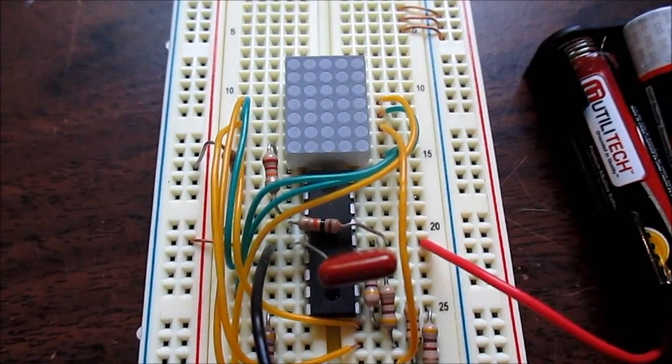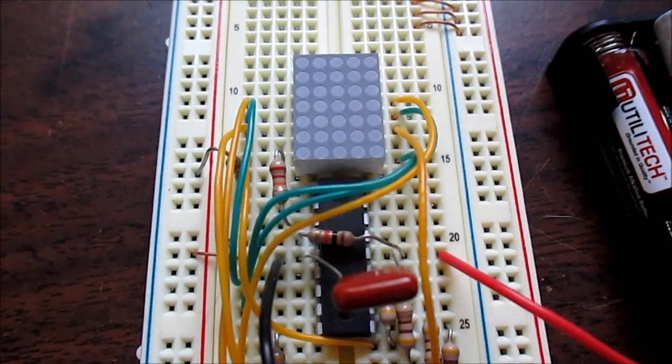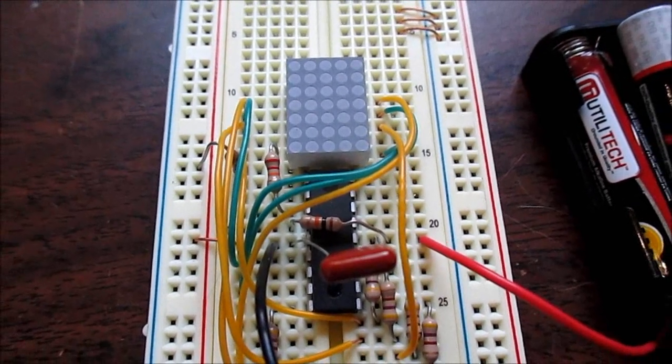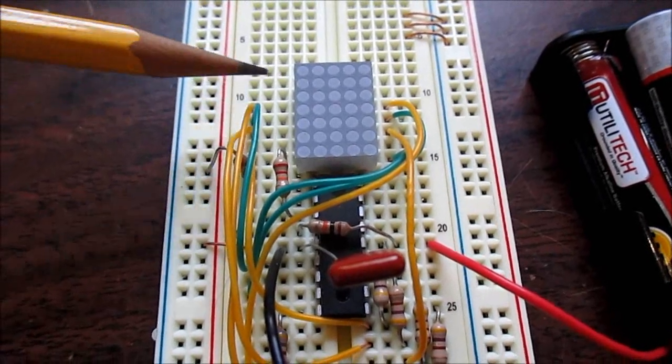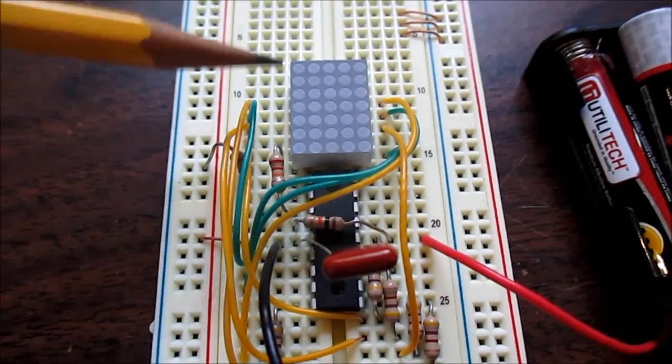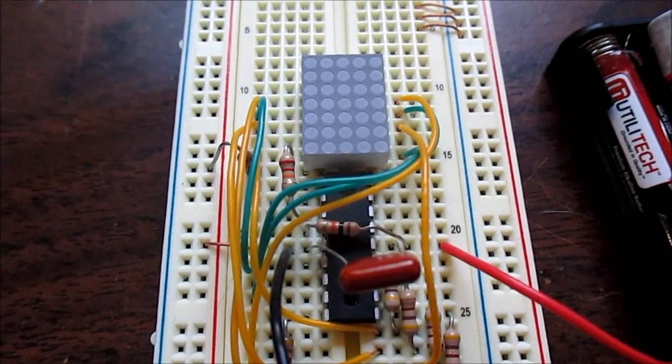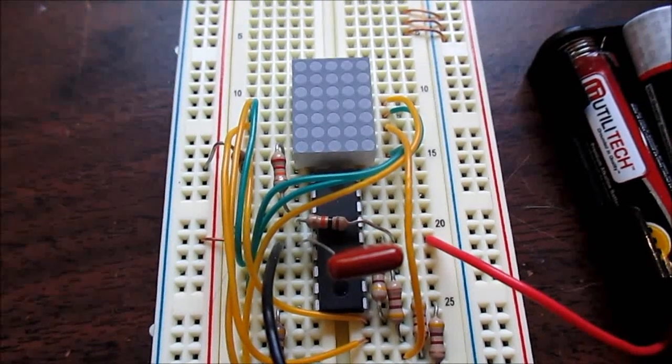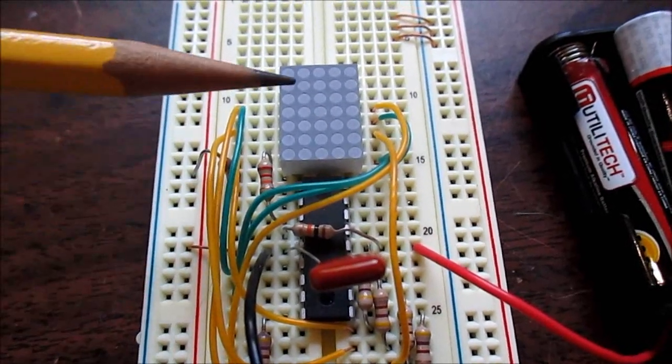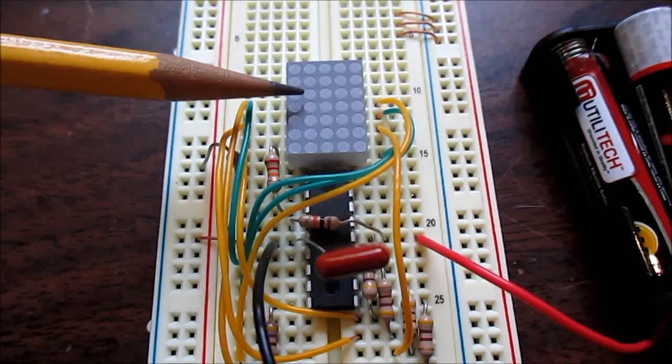So the only way I can do that is to multiplex them. I could add a shift register to control even more LEDs through multiplexing. But let's just keep this as simple as we can and multiplex a 5x3 display.